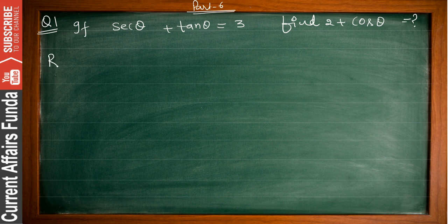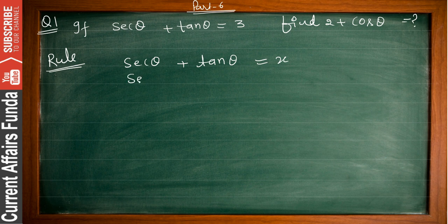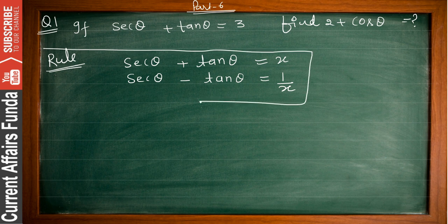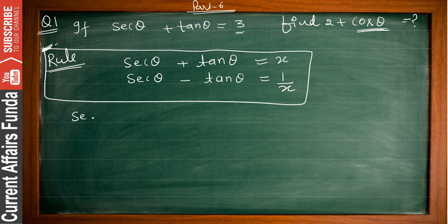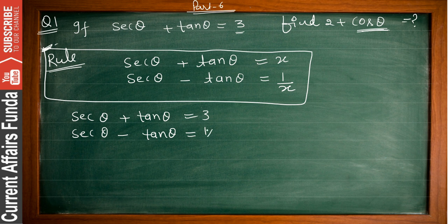So friends, if this question is here, there are certain properties and rules. First of all write down this rule: if sec θ + tan θ is given as x, then the value of sec θ − tan θ will be 1 divided by x. Kindly note down this rule in your notebook. So let's proceed. If sec θ + tan θ = 3, then the value of sec θ − tan θ = 1/3.